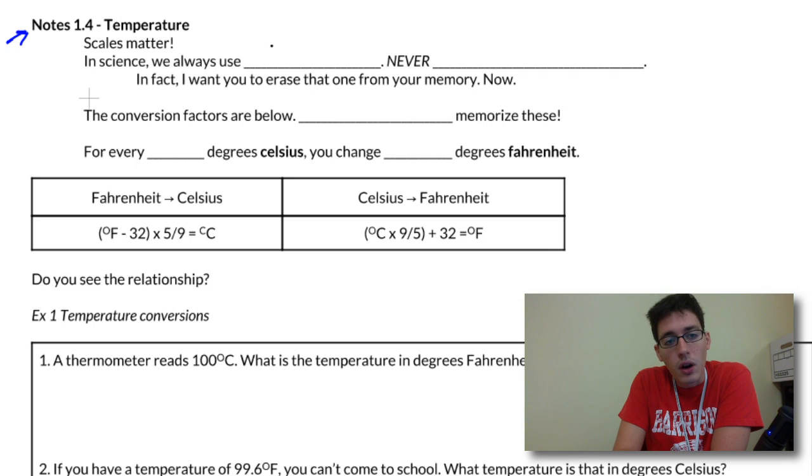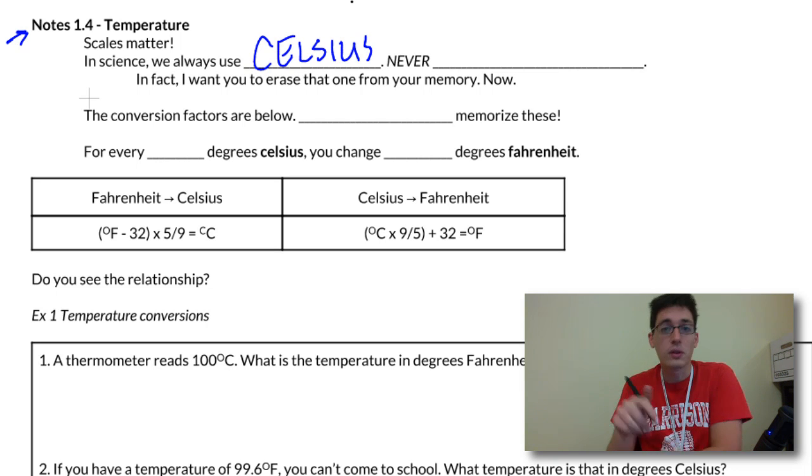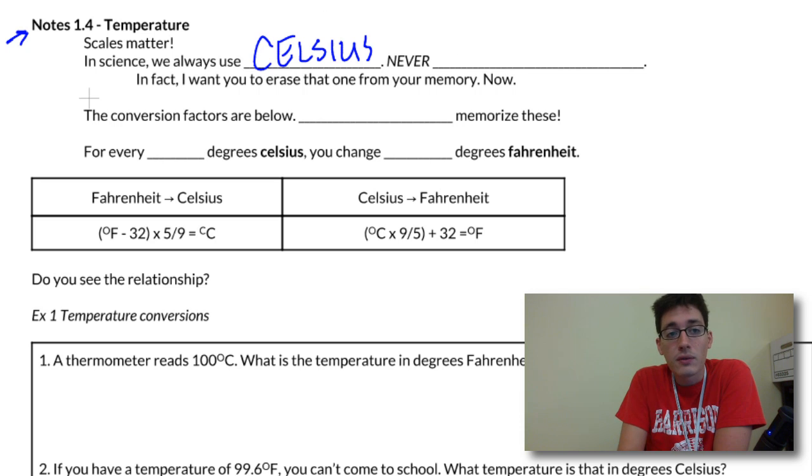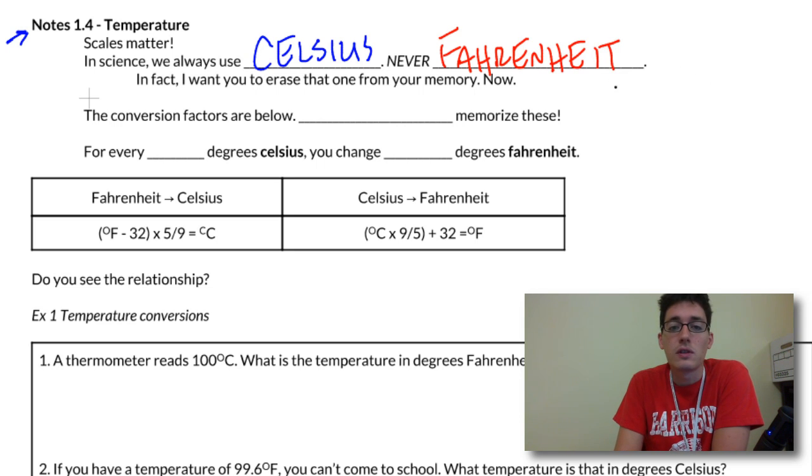In science, we always use the Celsius scale, which is the metric scale. It's what the rest of the world uses, and we are never going to be using the Fahrenheit scale. This is what the United States uses. Very few other countries use it because it's not a very simple scale to use. Celsius ranges: water freezes at zero degrees and boils at 100 degrees, so it's very easy to remember. Fahrenheit is just crazy.